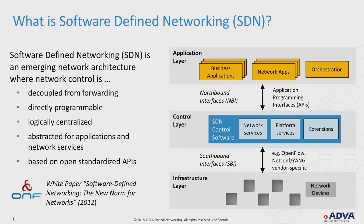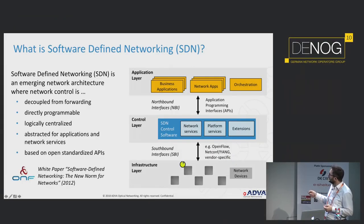The architecture has at the lowest layer the infrastructure layer with devices — routers, switches, or optical wavelength switch devices — communicating via southbound interfaces to the control layer. The southbound interface protocol is either OpenFlow, which is nowadays only used for packet networks, or for transport network gear, NetConf/YANG, which is the most prominent protocol most vendors now support. This interface could also be vendor-specific, like SNMP or CLI. The control layer has network services, platforms, and abstraction, communicating via an open and standardized northbound interface towards applications.